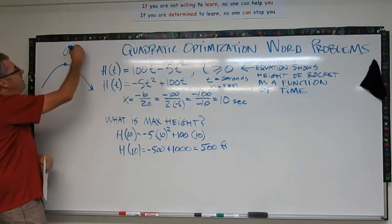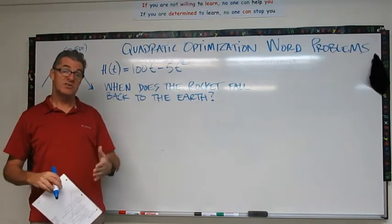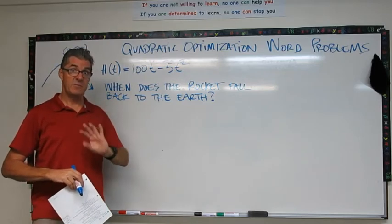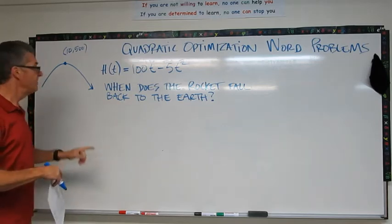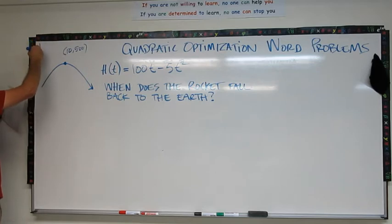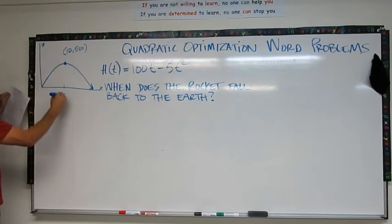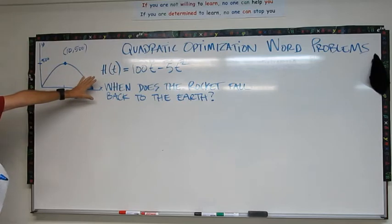So, the max height occurs at 10 seconds, and it occurs at 500 feet. So I can write here, 500. Okay, so another question you might get in this kind of a problem is, when does a rocket fall back to Earth? Okay? So, I want to take a look at my graph I made right here. Let's put the axis on it. So x and y. And now we know that this occurs at 10 seconds, and it's at 500 feet.